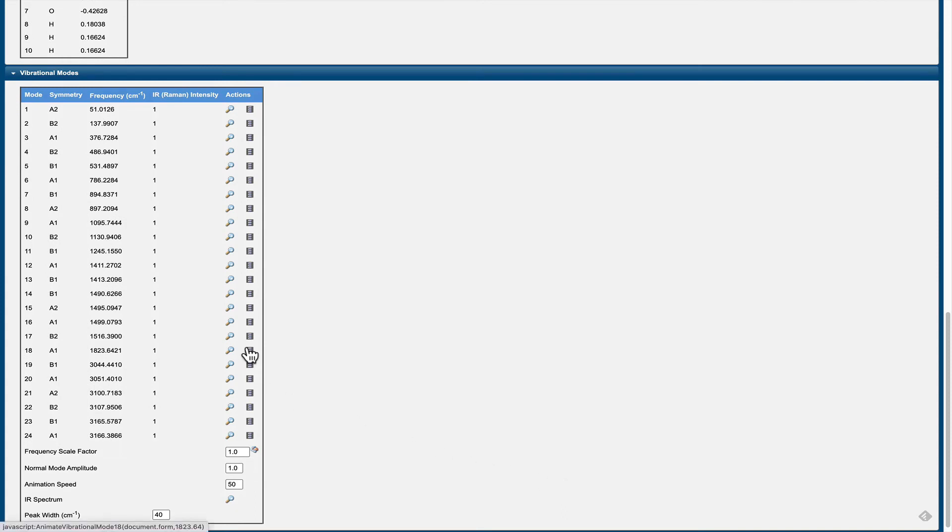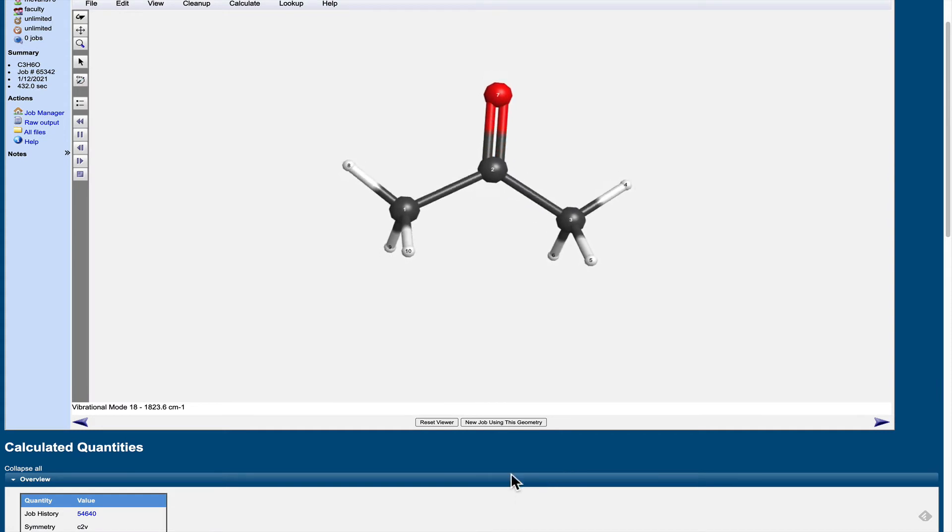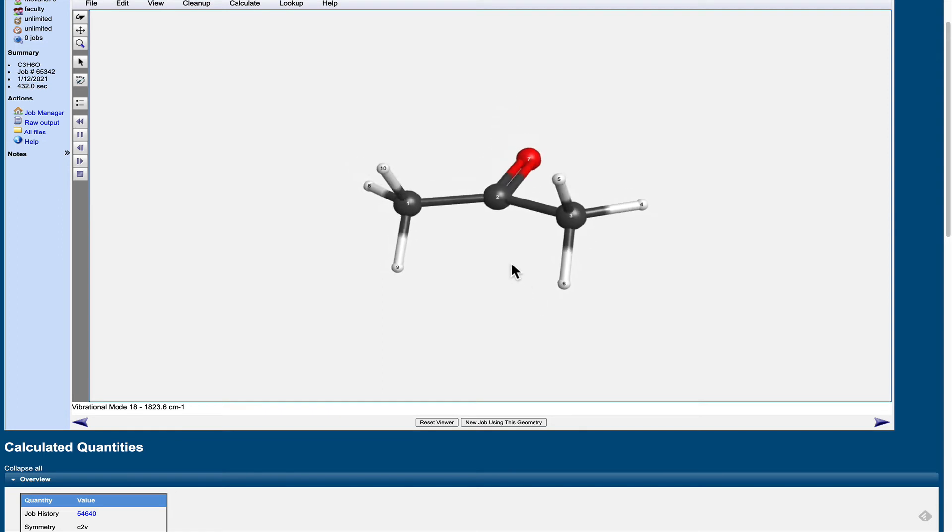Now, the most familiar vibration of the carbonyl group is this CO stretching vibration. And this is one type of vibration that we see. Note here that the symmetry of the molecule is maintained throughout this vibration.